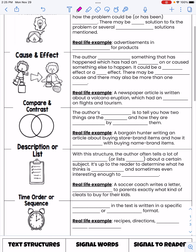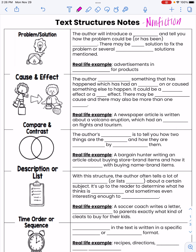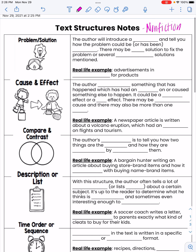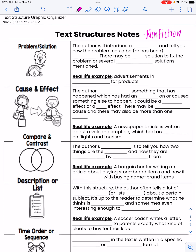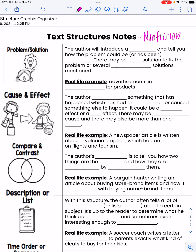There are five different types of text structures. We're going to start with problem and solution. Feel free to write things down with me; if you need to pause, take a minute to get caught up. In this type of text structure, the author will introduce a problem and tell you how the problem could be or has been fixed. There may be one solution or several different solutions mentioned.